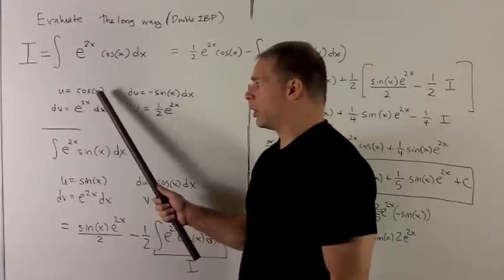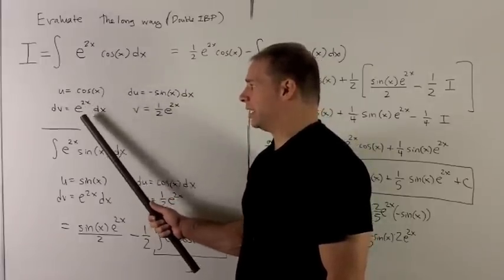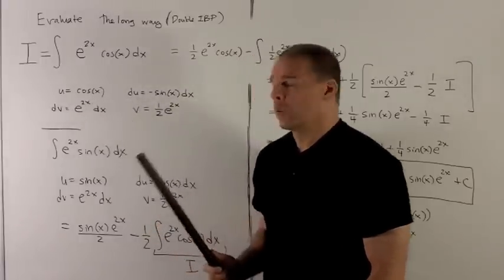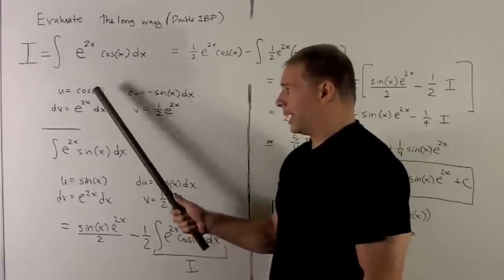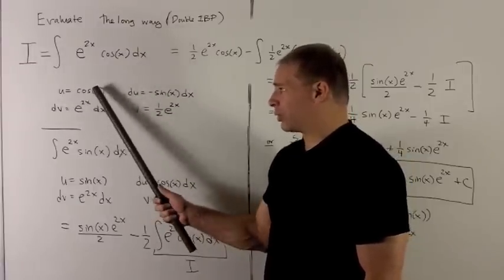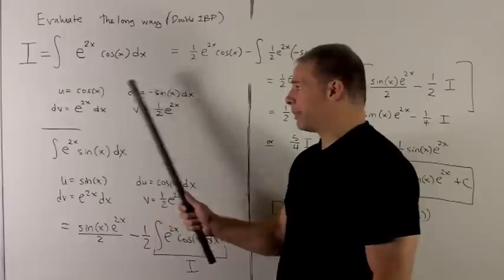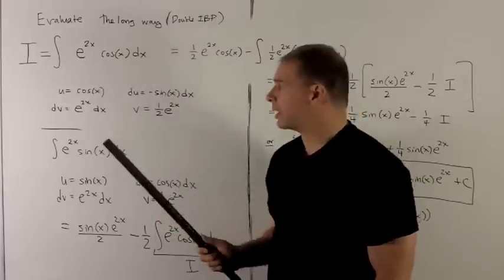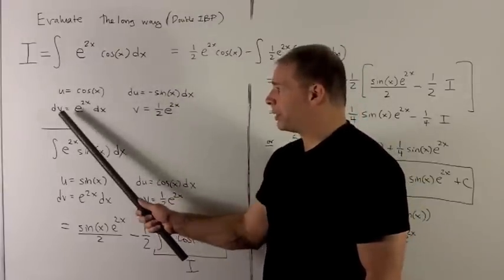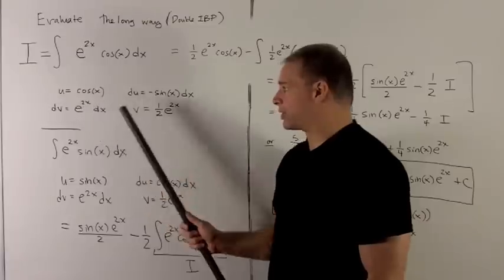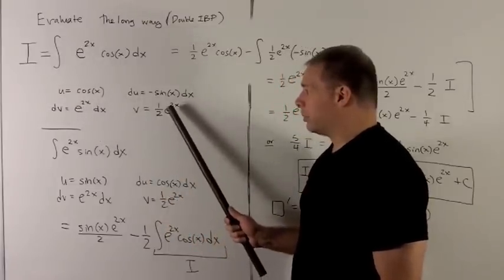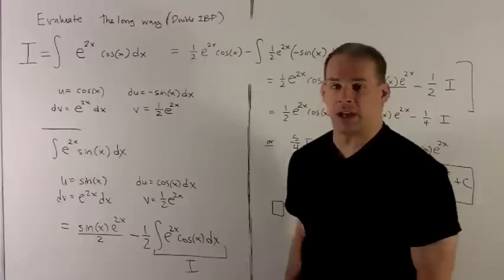So I'm going to let u be equal to cosine x, dv equal to e to the 2x dx. What's going to happen? When we let u be equal to the trig functions, when I take derivatives, they're just going to bounce back and forth. The e to the 2x, as I take it to any derivative, I'm just going to get the e to the 2x back, but we'll pick up some constants as we go through.